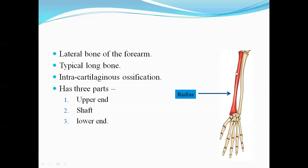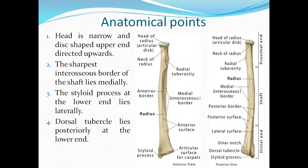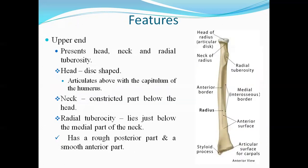Radius has three parts: the upper end, the shaft, and the lower end. The upper end consists of the head, neck, and radial tuberosity.